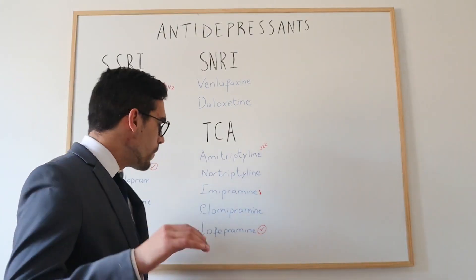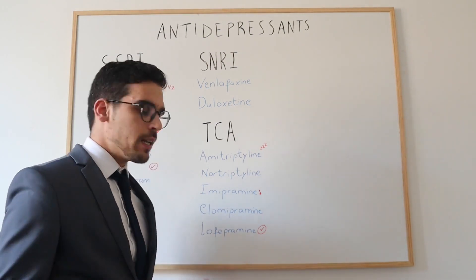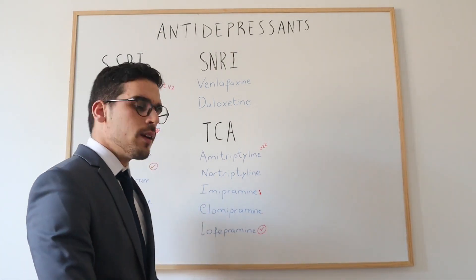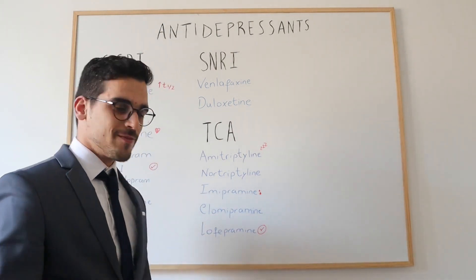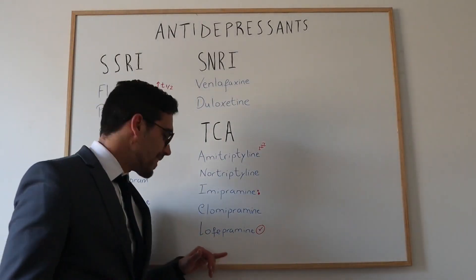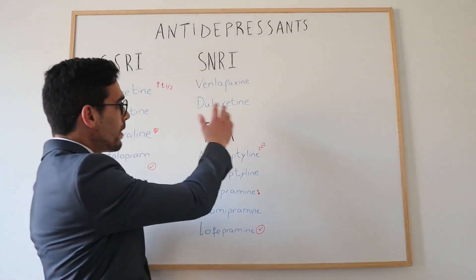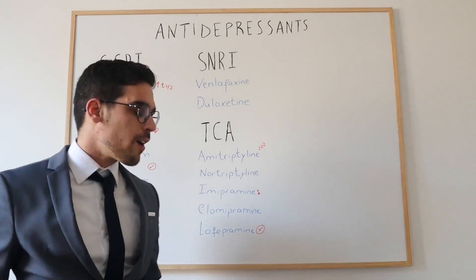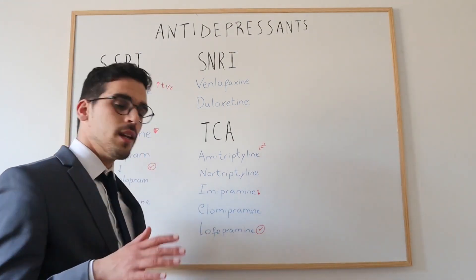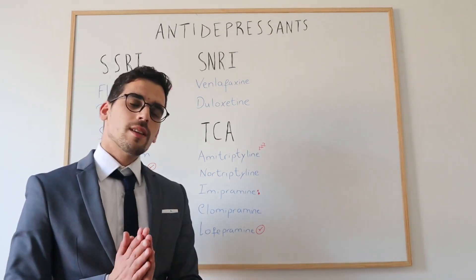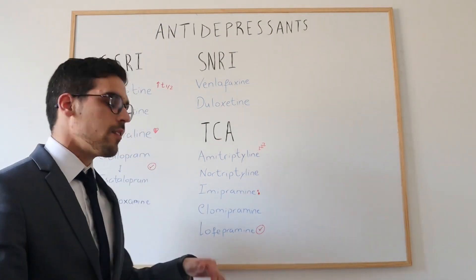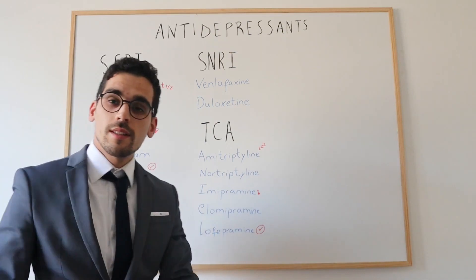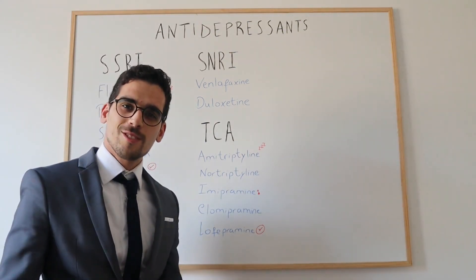Then we have clomipramine. Clomipramine does not affect noradrenaline much but is a potent serotonin reuptake inhibitor, making it quite suitable for use in obsessive compulsive disorder. Lastly, lofepramine has the best toxicity profile among the TCAs — it does not show many anti-muscarinic effects and has less significant sedative properties, so it may be a good choice when starting a patient on a TCA.